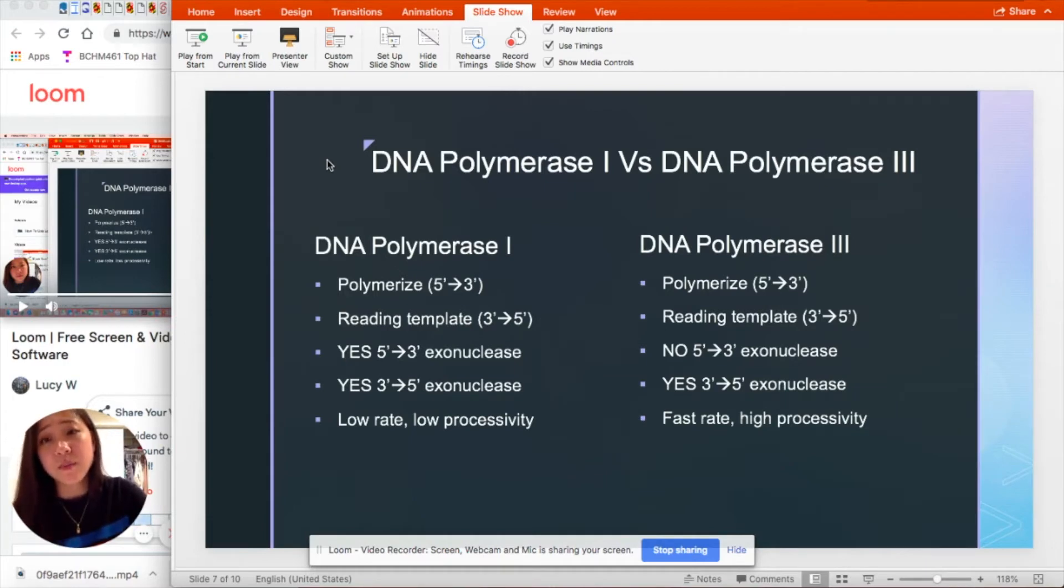However, polymerase one has both five prime to three prime and three prime to five prime exonuclease activity, while polymerase three only has three prime to five prime exonuclease activity.